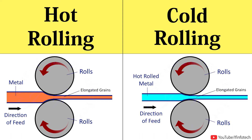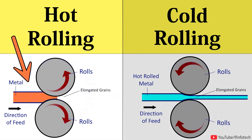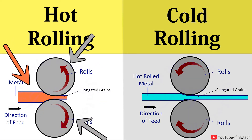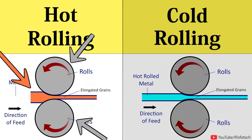In today's session, we will learn about the difference between hot rolling and cold rolling process. In hot rolling process, metal is passing through two rolls rotating in opposite direction at uniform peripheral speed.